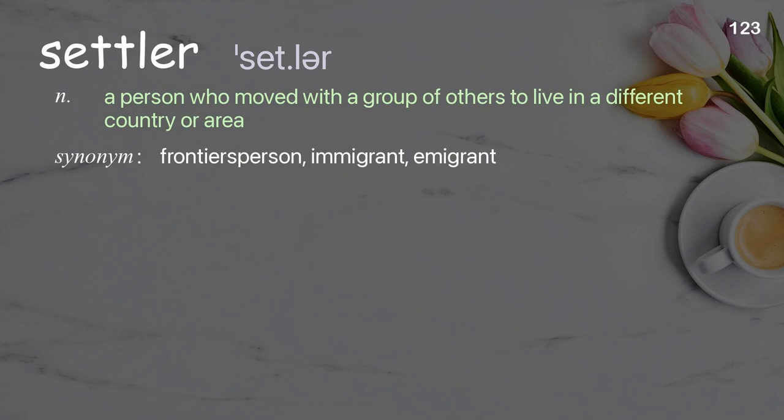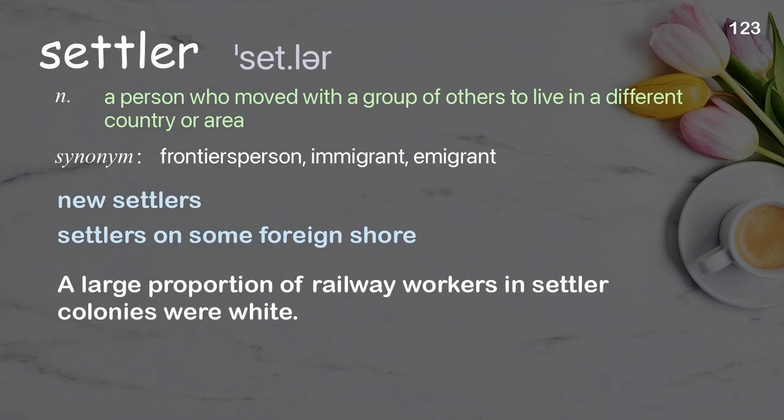Settler: a person who moved with a group of others to live in a different country or area. Examples: new settlers, settlers on some foreign shore. A large proportion of railway workers in settler colonies were white.